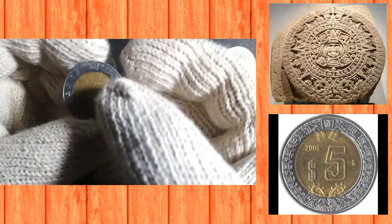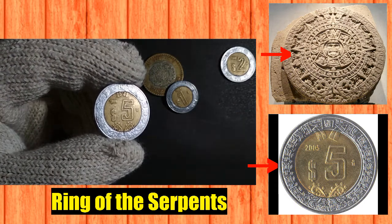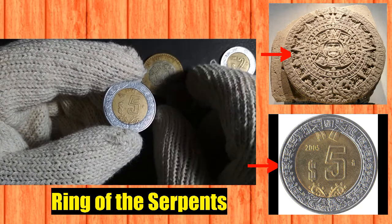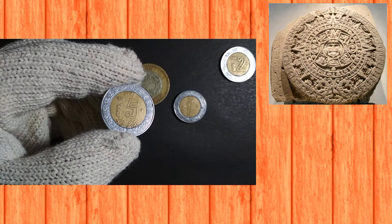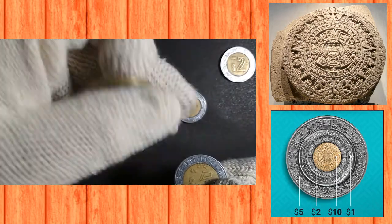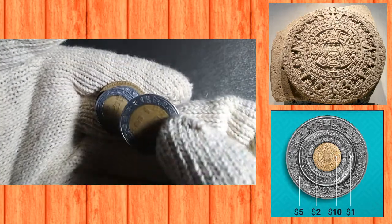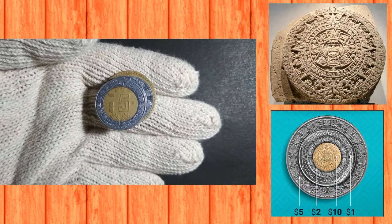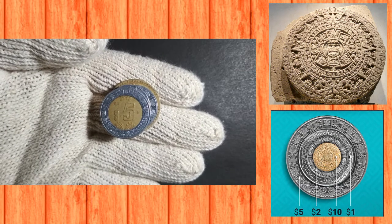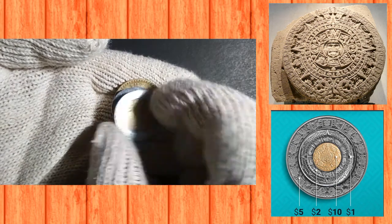The last and outermost ring is made up of serpents — this is the 'ring of serpents,' showing two serpents according to Aztec culture, which are said to have created the current sun. When you place these coins together — the 10 peso coin in the center, then the 2 peso, then the 1 peso, and finally the 5 peso coin — you get the entire Aztec calendar, which is a very important cultural symbol for the Mexican people. It was a really great idea to depict their cultural history and tradition this way.